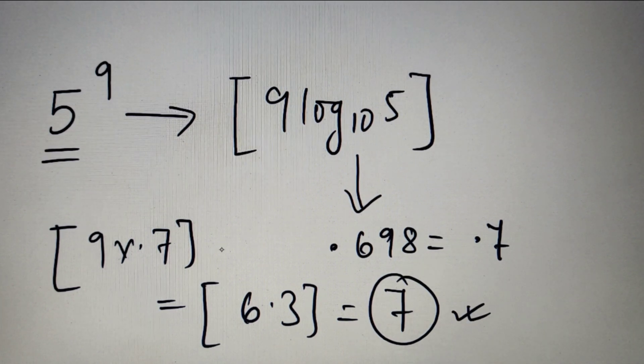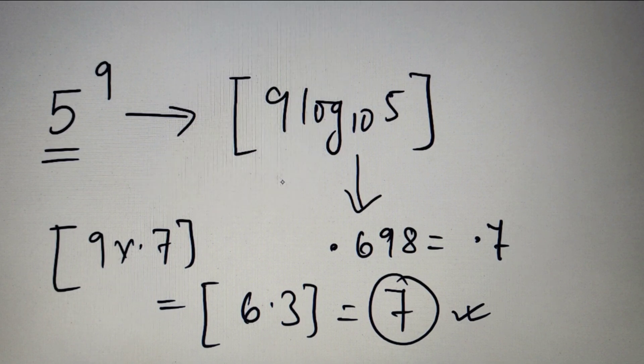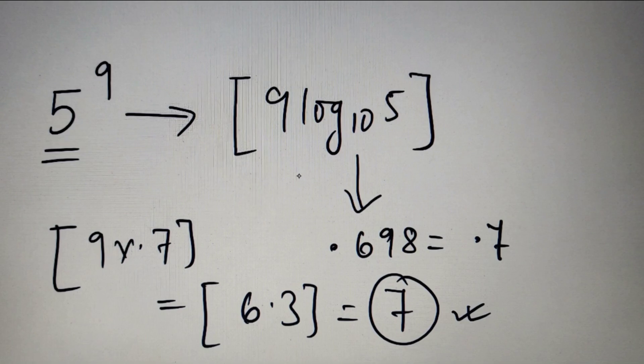So you can see that this formula is very simple, and by the help of this we can calculate the number of digits of any number of the form A raised to the power B very easily.